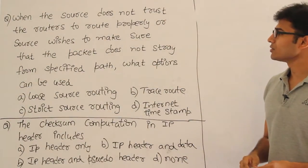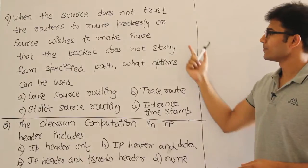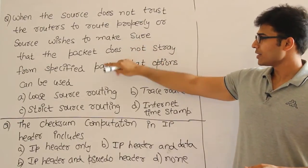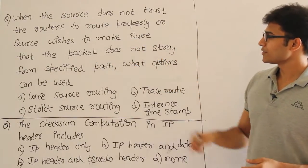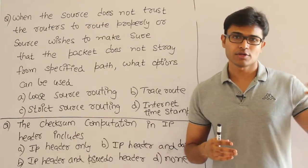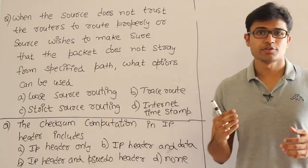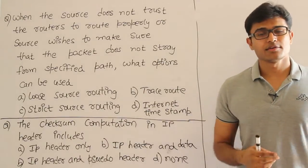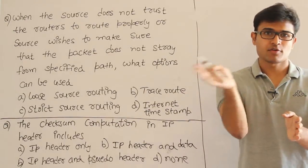When a source does not trust the router to route properly, or the source wishes to make sure that the packet does not stray from a specified path, which means a source doesn't want to leave the routing to the router, and a source has some route in its mind and its packet should not stray away from that path, it should go only in that path.